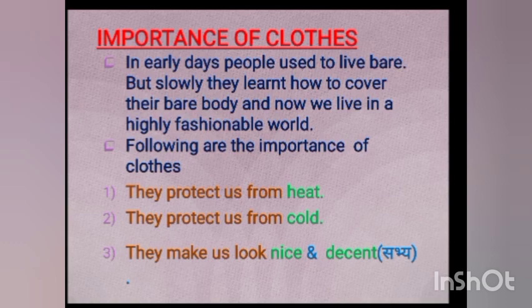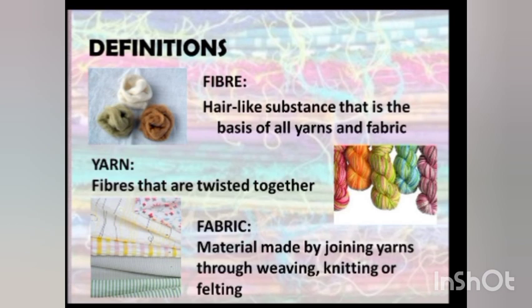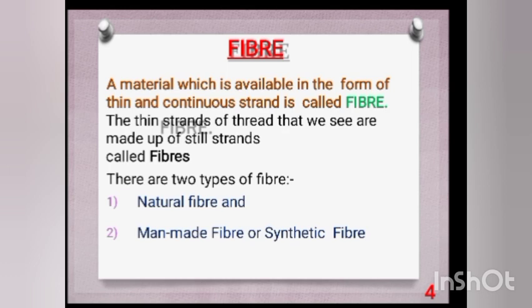We will see the importance of clothes: they protect us from heat and cold, and help us look nice. Clothes are made up of fiber, the smallest component — like thin hair strands. From fibers, yarn is made, and from yarn, fabric is made. There are two types of fibers: natural fibers and artificial fibers.